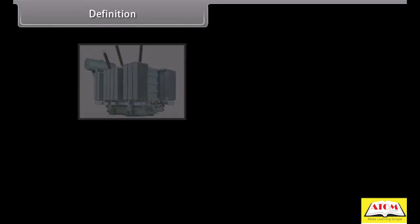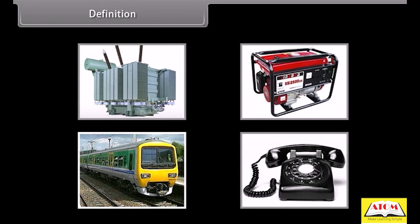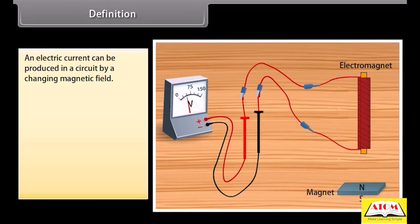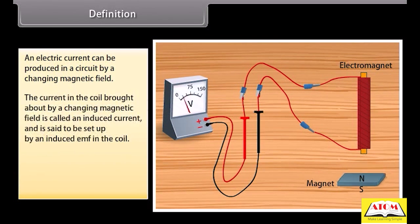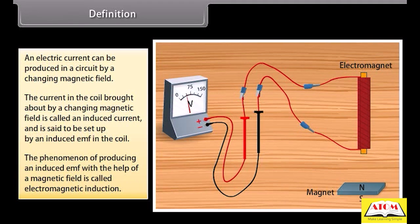Definition. In our everyday life, electromagnetic induction plays a vital role. Transformer, generator, train, and telephone are some examples which work on the principle of electromagnetic induction. An electric current can be produced in a circuit by a changing magnetic field. The current in the coil brought about by a changing magnetic field is called an induced current, set up by an induced EMF in the coil. The phenomenon of producing an induced EMF with the help of a magnetic field is called electromagnetic induction.